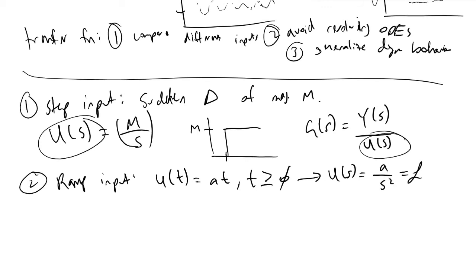That is simply just taking the Laplace transform of A times t. Visualizing what ramp inputs typically look like, we have graphs that look like this: we'll have a function like this with a slope of A, and this is our frequency domain.